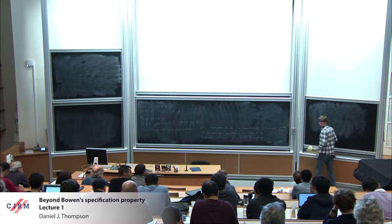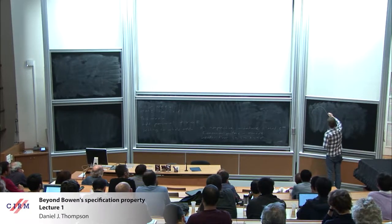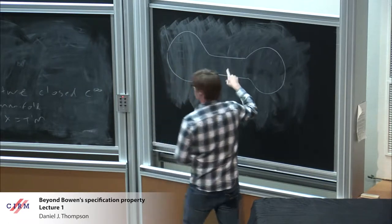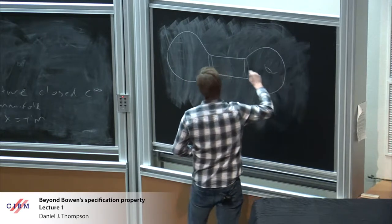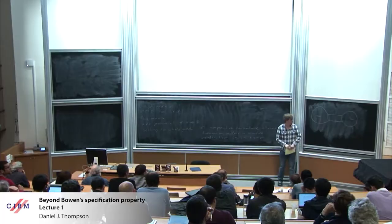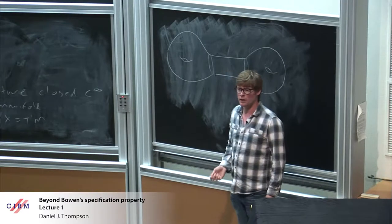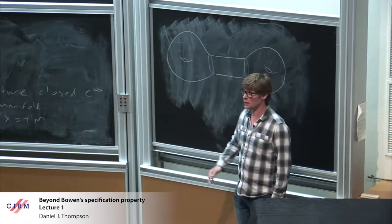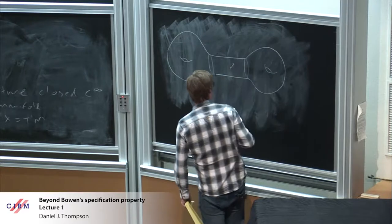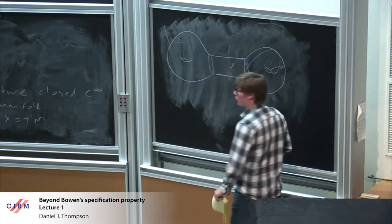Let's talk about what this system is. The first example to think about: I draw a genus-2 surface, but I'm going to draw it with a flat cylinder in the middle. The geodesic flow is the dynamical system you get by picking a point and a direction — that uniquely determines a geodesic — and then you walk along that geodesic at unit speed. A point in the unit tangent bundle defines a geodesic that might wrap around, and we walk along it at unit speed.